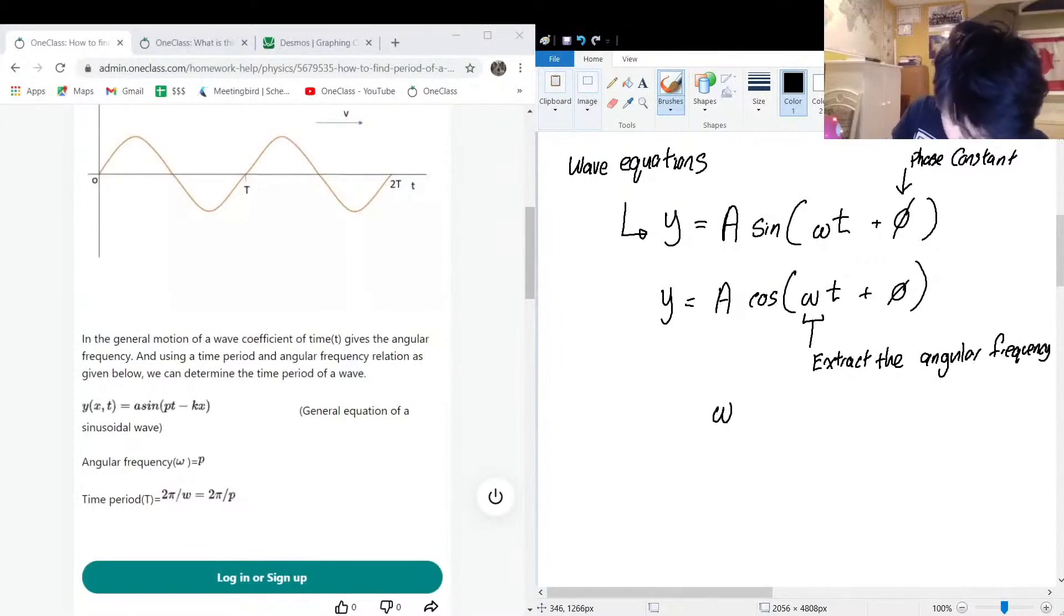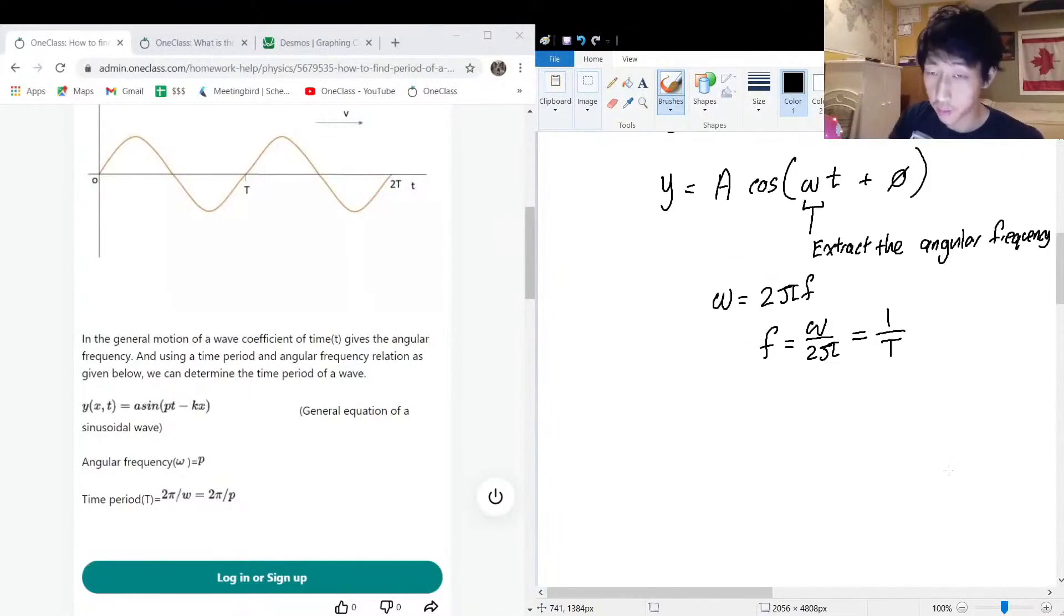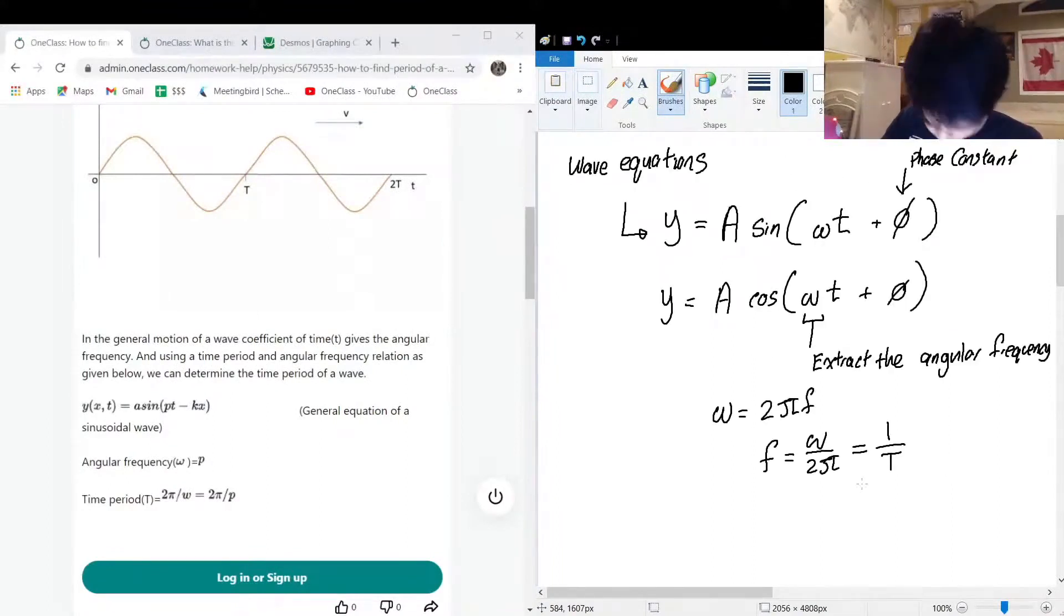We know that angular frequency is equal to 2π frequency, and we know that we can isolate for frequency by doing f equals omega divided by 2π, and we know that this is equal to 1 over T because frequency is the reciprocal of the period. So we can use this equation to isolate for T. So T is equal to 2π divided by the angular frequency.